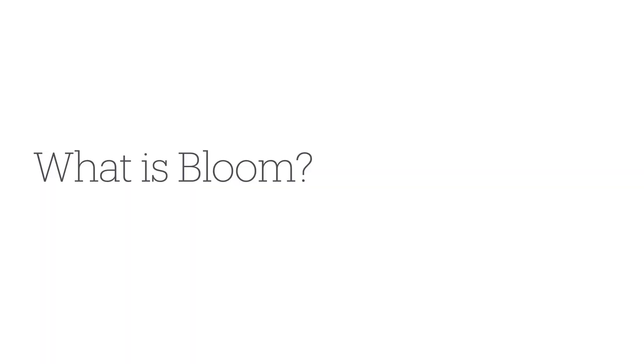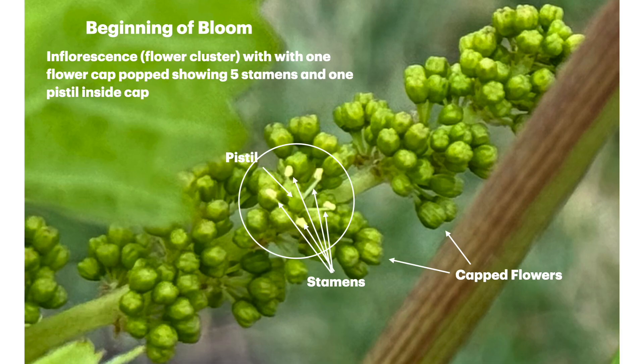Let's take a closer look in my vineyard at some of the developing flower clusters. Grape clusters come from flower clusters, and flower clusters with multiple flowers are known as inflorescences. In this image here, you see a very young inflorescence with just the first cap popping off of one of the flowers, showing its five stamens and the pistil inside the center of the flower.